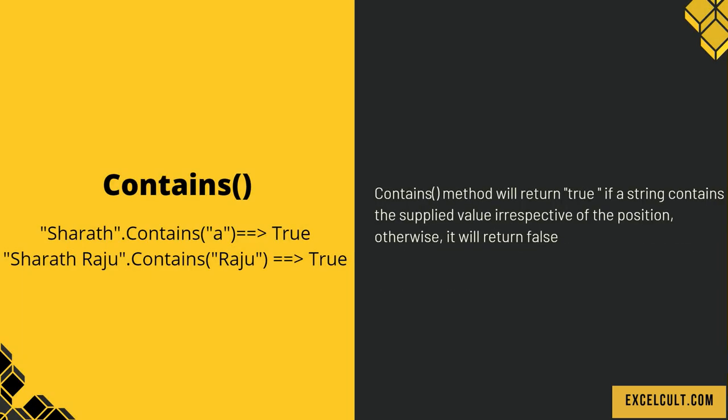Then contains. The contains method will return true if a string contains the supplied value, irrespective of the position; otherwise it returns false. 'SHERATH'.contains('A') returns true because the string 'SHERATH' has A in it. And 'SHERATH RAJU'.contains('RAJU') returns true because there is a word 'RAJU' in the string supplied.